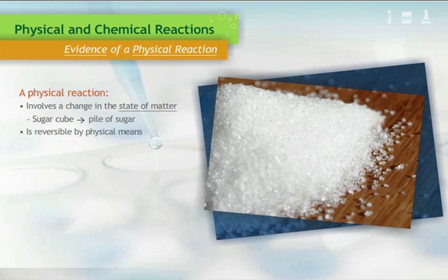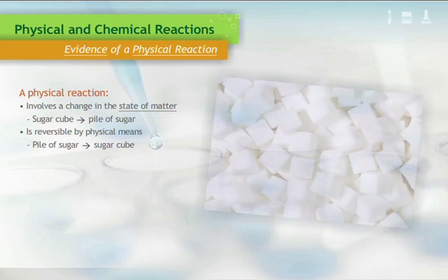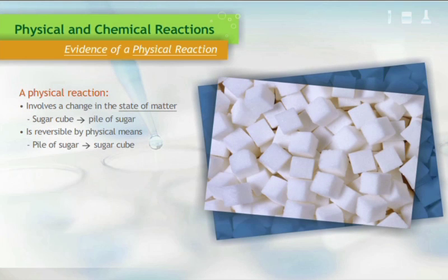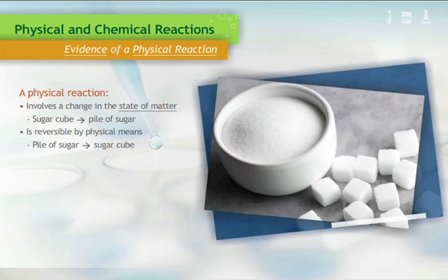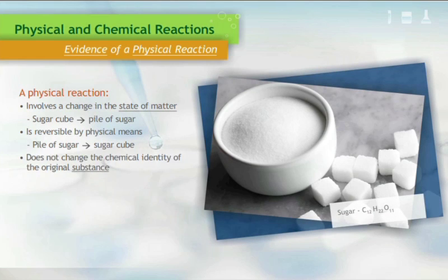Second, a physical reaction is reversible by physical means, meaning that the pile of sugar could be returned to cube form. And the third characteristic of a physical reaction is that the reaction does not change the identity of the original substance.